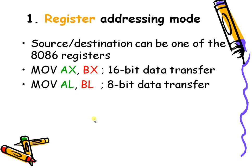In register addressing mode, the operand is placed inside a register, and that register is given as part of the instruction. The source or destination can be one of the 8086 registers. The original operand is inside the register, and that register is part of the instruction. Here, 16-bit data transfer happens when using 16-bit registers, whereas 8-bit data transfer happens when using only 8-bit registers.